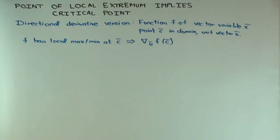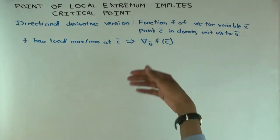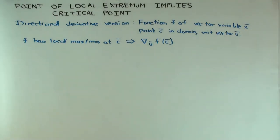In this lecture I'm going to consider a multivariable version of something you know well from single variable calculus: if you have a point of local max or min, then it's a critical point. You probably don't know what a critical point means for a function of multiple variables, so I'm going to figure out what that should mean.